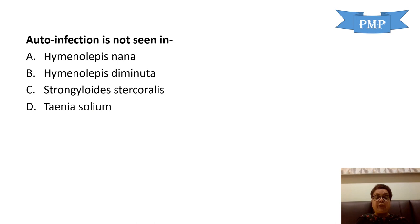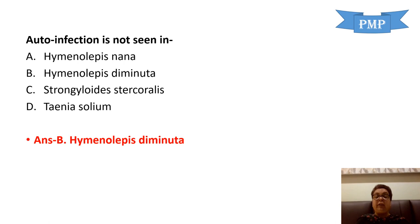Moving on to the next question: auto-infection is not seen in which of the following? Options: Hymenolepis nana, Hymenolepis diminuta, Strongyloides stercoralis, Taenia solium. The answer is Hymenolepis diminuta, which is also called the rat tapeworm.